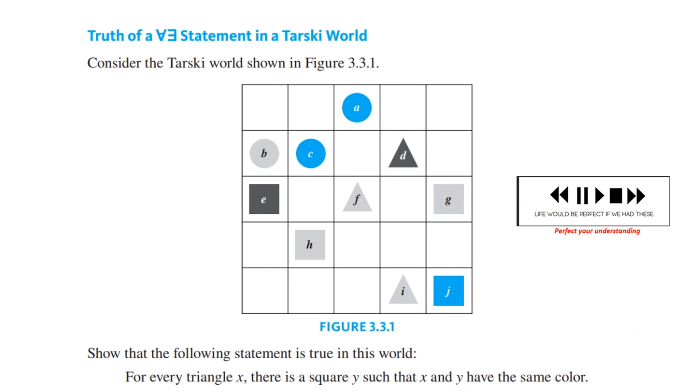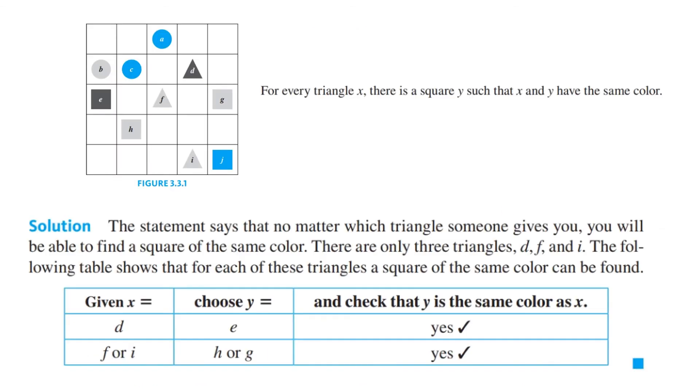Let's see how you did. The statement says that no matter which triangle someone gives you, you will be able to find a square of the same color. There are only three triangles, D, F, and I, and the following table shows that for each of these triangles you can find a square, E, H, or G, such that it is the same color. So we have exhaustively checked this out in this finite world.